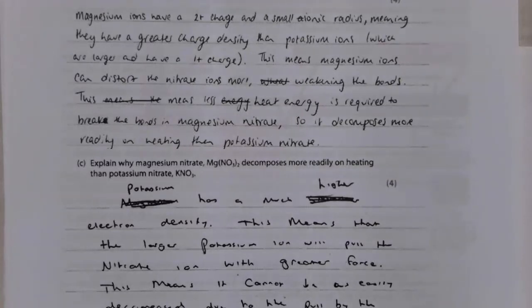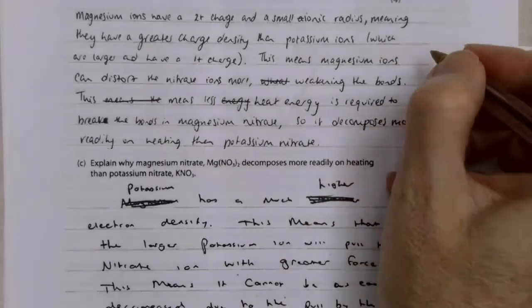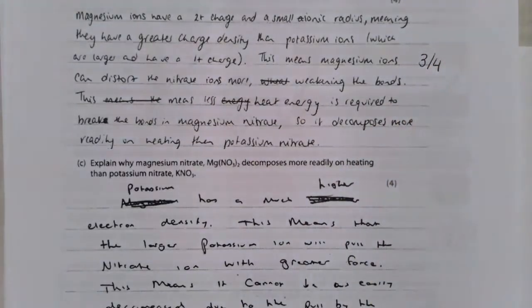So this top answer was a relatively good answer. It scored three out of the four marks available. It had a mark for giving the fact that magnesium ions have a higher charge and a smaller ionic radius. It got a mark for saying that the magnesium ions can distort the electron cloud more easily. They lost the last mark because they weren't specific about which bonds were being weakened, which bonds were being overcome. They talked about the bonds in magnesium nitrate, but they weren't clear if that was the bonds in the nitrate or the bonds between the magnesium and the nitrate. And you need to be very careful of that last point.